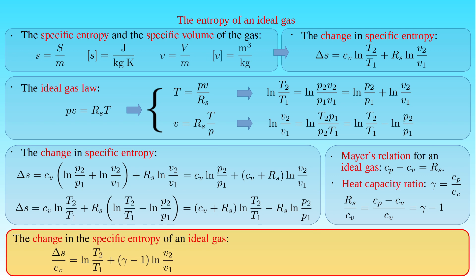If the transformation of the state of an ideal gas consists of an isochoric process and an isothermal process, then the change ΔS in entropy over the specific heat capacity C_V at constant volume equals the natural logarithm of the ratio of the final temperature T2 to initial temperature T1, plus (gamma minus 1) times the natural logarithm of the ratio of the final specific volume V2 to initial specific volume V1.